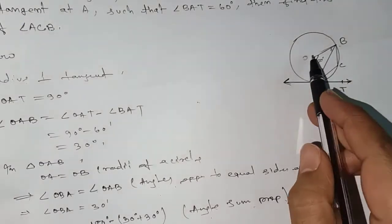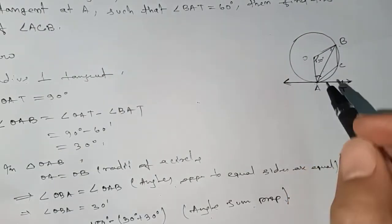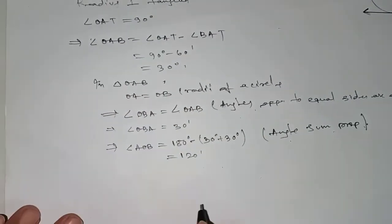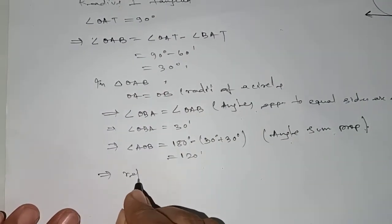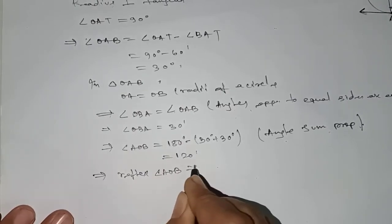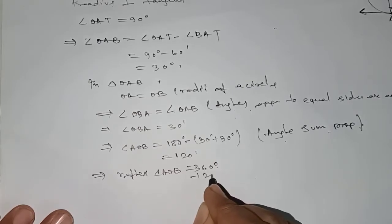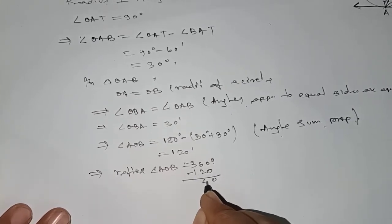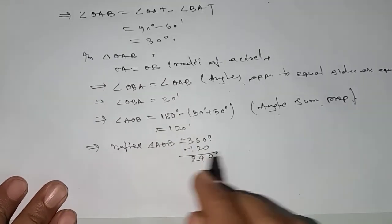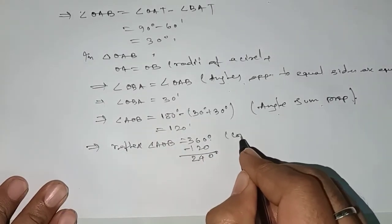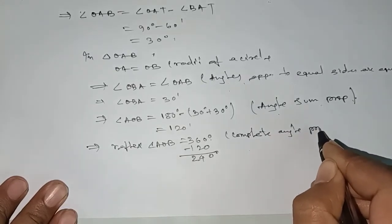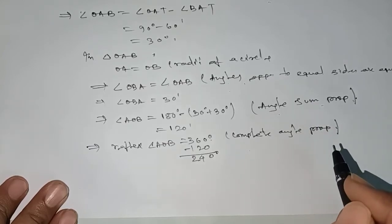Angle at the center. Now we need to find the complete angle, the reflex angle. This implies reflex angle AOB equals 360 minus 120, which gives 240 degrees, using complete angle property or angle at a point.